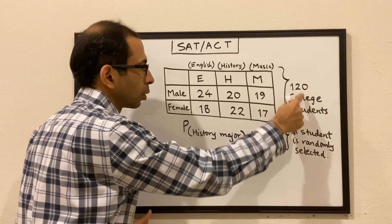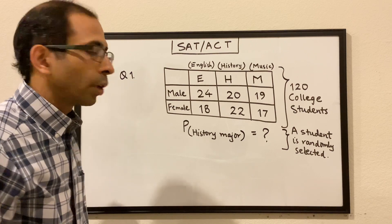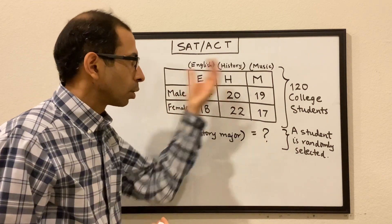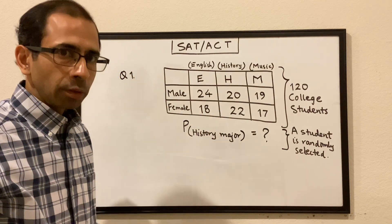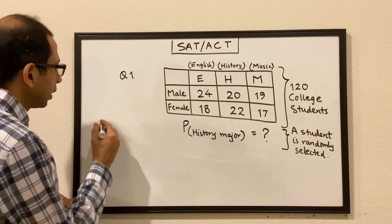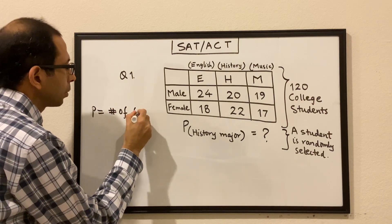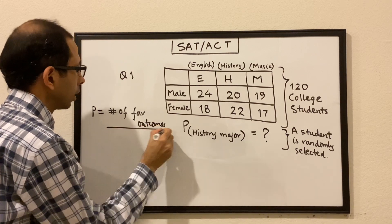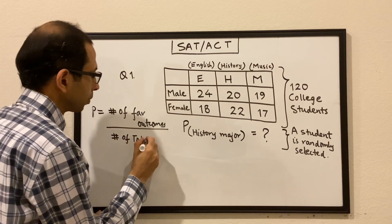So this is the breakup of those 120 college students. Let's say that we have to find the probability that a student is selected randomly from this group — what is the probability that a student would be doing the major in history? What is probability? Probability is nothing but the number of favorable outcomes divided by the number of total outcomes.